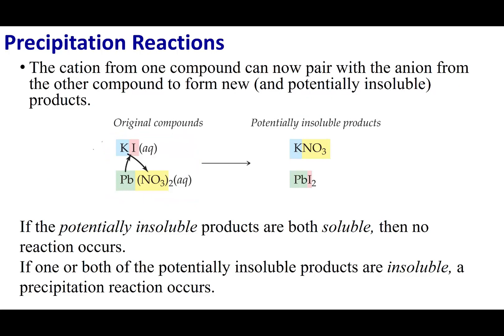I'm going to give you two ionic compounds: potassium iodide and lead nitrate. The first thing we want to know is what ions we're dealing with. We have K+ and I−. For lead nitrate, we have Pb2+ and NO3−, which is 1−. Swapping partners, potassium goes with nitrate. Potassium is 1+ and nitrate is 1−, so they come together in a 1-to-1 ratio, giving KNO3.